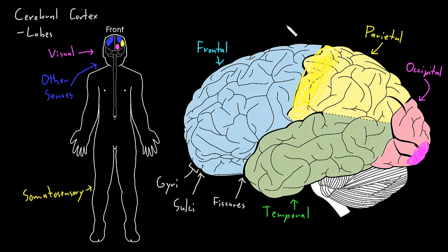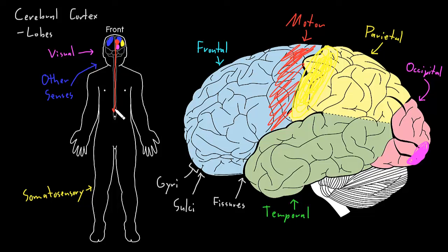Similarly, motor information — information about movement and control of skeletal muscles — involves areas of cerebral cortex that control muscles on the other side of the body. So areas of cerebral cortex on the left side of the cerebrum carry information via upper motor neurons down to lower motor neurons on the other side of the spinal cord, affecting movement of the other side of the body. For instance, the muscles of the right leg would primarily be controlled by areas of cerebral cortex on the left side of the cerebrum.